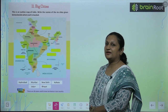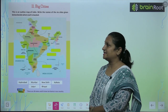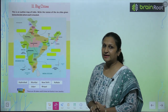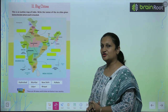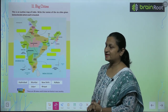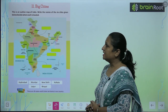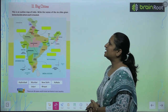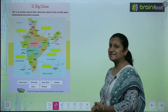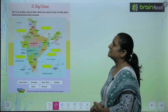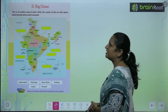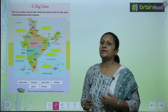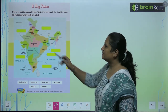Children, see Chapter 11 — Big Cities. Here we have a map of India and they have asked questions related to that. This is the outline map of India. Write the name of 6 cities given below, besides where each is located. So we have to mention the name of the cities here.